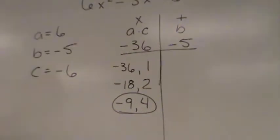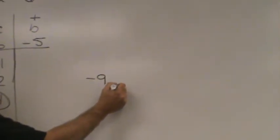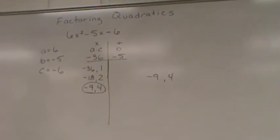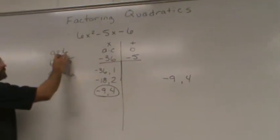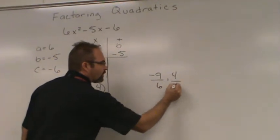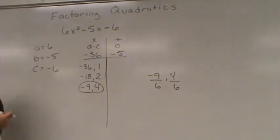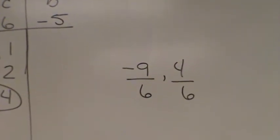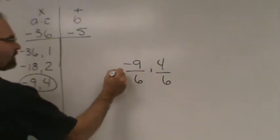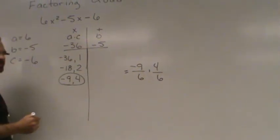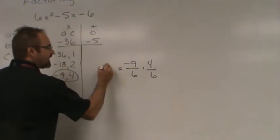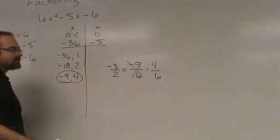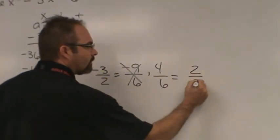Next step in the process: I'm going to write down that negative 9 and that 4, then put them over A. A in this case was 6. Can we simplify these fractions? We must leave them in fractions, but in simplified form. Negative 9 over 6 simplifies to negative 3 over 2, and 4 over 6 simplifies to 2 over 3.